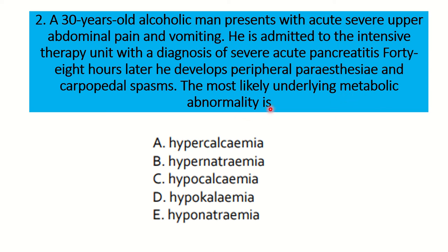After careful reading, we have to find out the key points. First, we have a 30-year-old alcoholic man presenting with severe acute upper abdominal pain and vomiting, diagnosed with severe acute pancreatitis. 48 hours later, he develops peripheral paresthesia and carpopedal spasm. We need to find out which cause is responsible for these events in the context of severe acute pancreatitis.